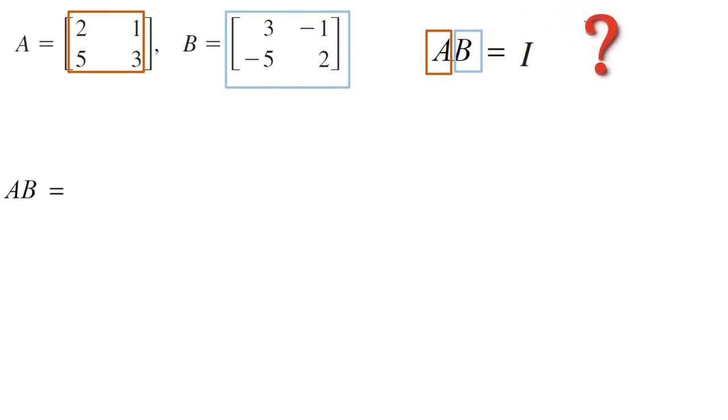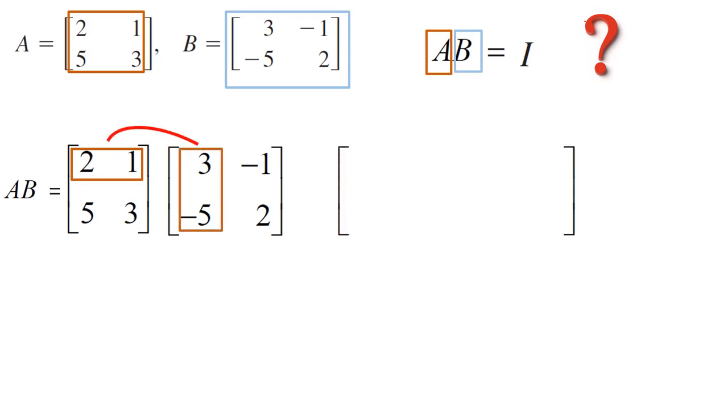Let us begin. What is A times B? Write down the first matrix, write down the second matrix, and start applying the method of finding the dot product between the first row and the first column. That's how we find the multiplication of two matrices.